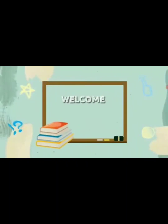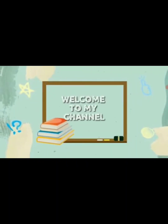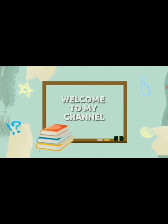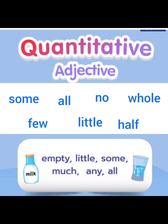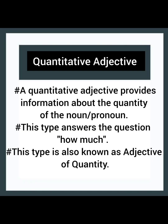Good evening everyone. I hope all of you are fine and doing great. I am here with another new video. Yesterday I started with the types of adjectives and my today's topic is quantitative adjective. A quantitative adjective provides information about the quantity of the noun or pronoun. This type answers the question 'how much' and is also known as adjective of quantity.